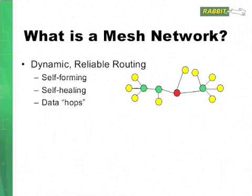Data in a mesh network hops along the network. For example, the data routes may change, but the data is passed. So if this node here wants to send to this node over here, what it'll do is pass the data onto the routing node that it's connected to, and the data just hops along from node to node to node until it reaches its destination.